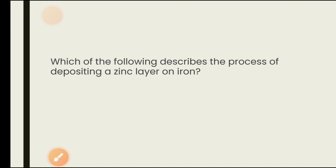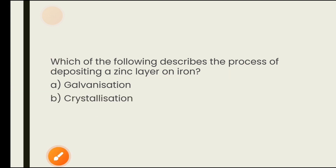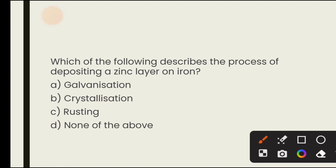Which describes the process of depositing a zinc layer on iron? I mentioned this earlier in this video. We apply zinc on iron to prevent rusting. Options are galvanization, crystallization, rusting, none of the above. The answer is galvanization — galvanization is the process in which a zinc layer is stored on iron.